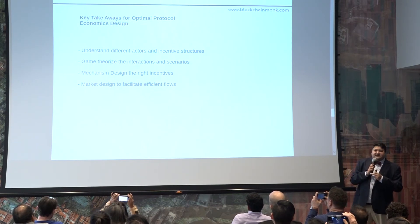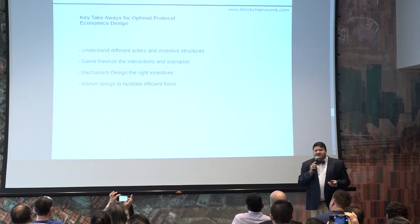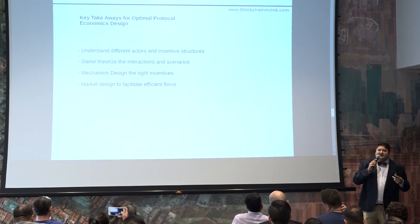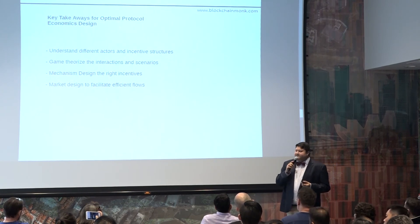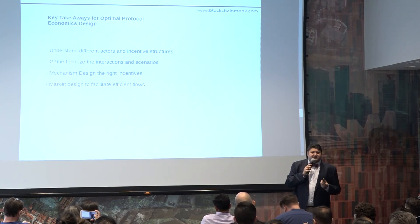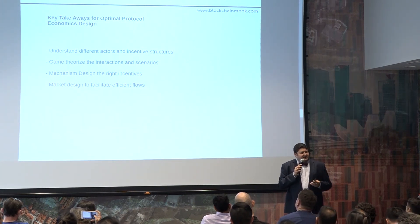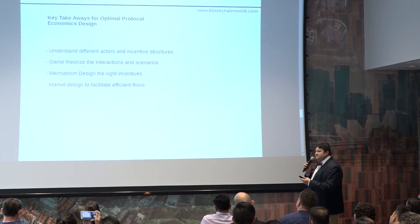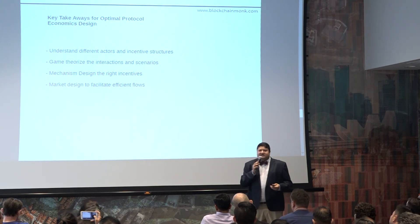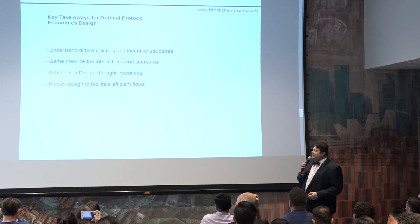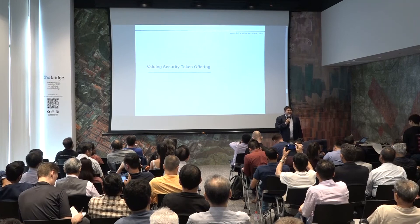So, the key takeaways from a protocol design perspective: first, understand the different actors and incentive structures — a lot of protocols are getting attacked regularly, it's becoming a weekly occurrence. Second, game theorize interactions — it's very important to understand game theory if you want to be a protocol designer. Many are technology people without economics backgrounds, so reading books on game theory models is strongly recommended. Third, mechanism design — be a rational actor, provide the right incentives, promote participation, and facilitate the right market design for token interactions. With that, we end session two, before a five-to-ten-minute break and then the most exciting session on security token offering valuations.